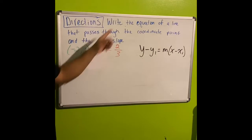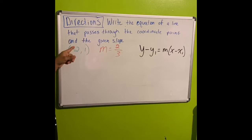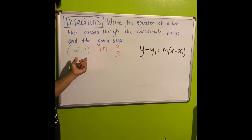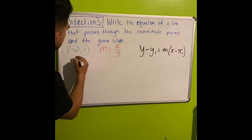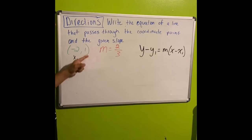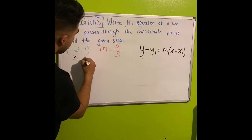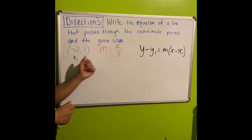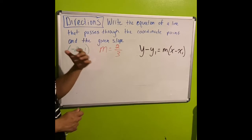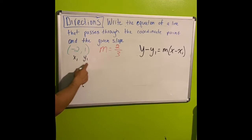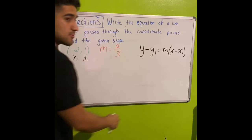For the next problem, we write the equation of a line passing through the coordinate point (-2, 1) with slope 2/3. So x-sub-1 is -2 because it's the x-coordinate, y-sub-1 is 1 because it's the y-coordinate, and m is 2/3. We'll substitute these into the point-slope formula to create the equation.